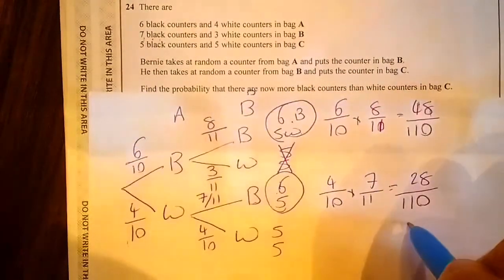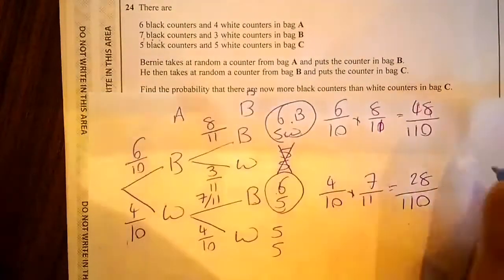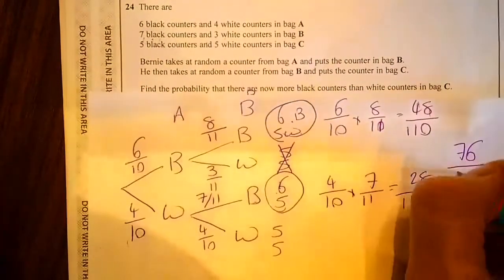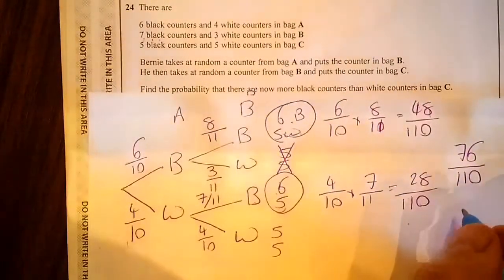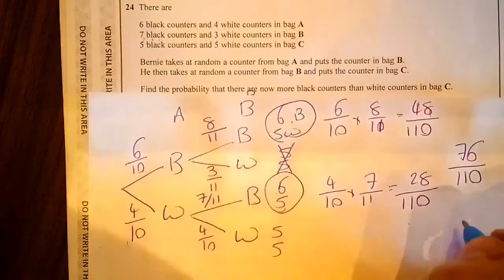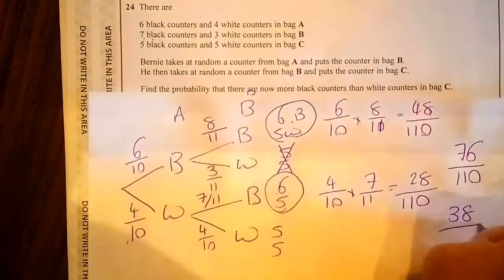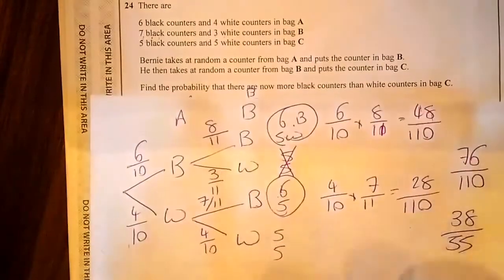Now because these are the only two options we add them together to make it 76 over 110. That's your answer if you want. If you want it to be smart we can count it down to 38 over 55. That's your answer.